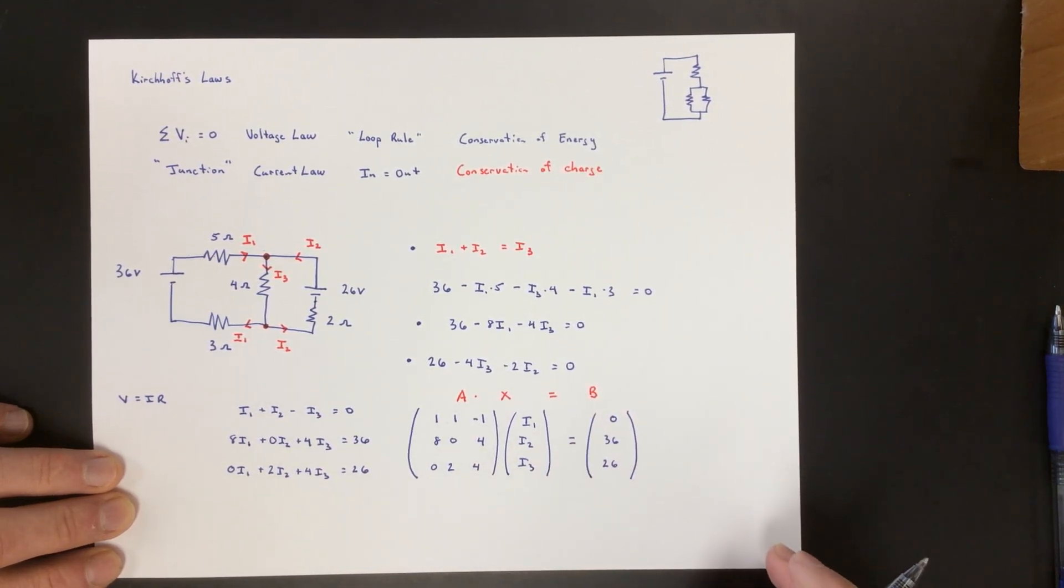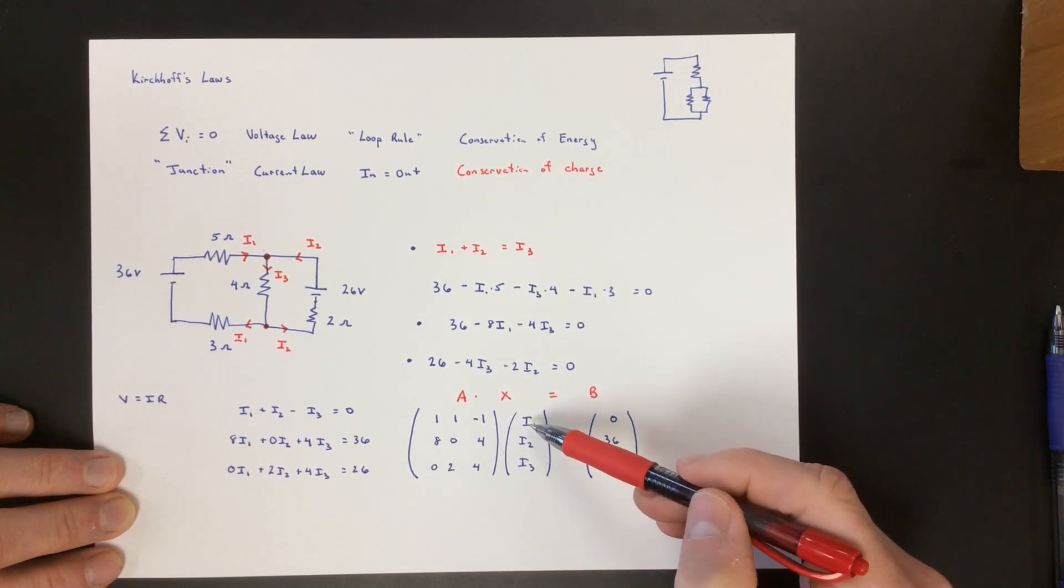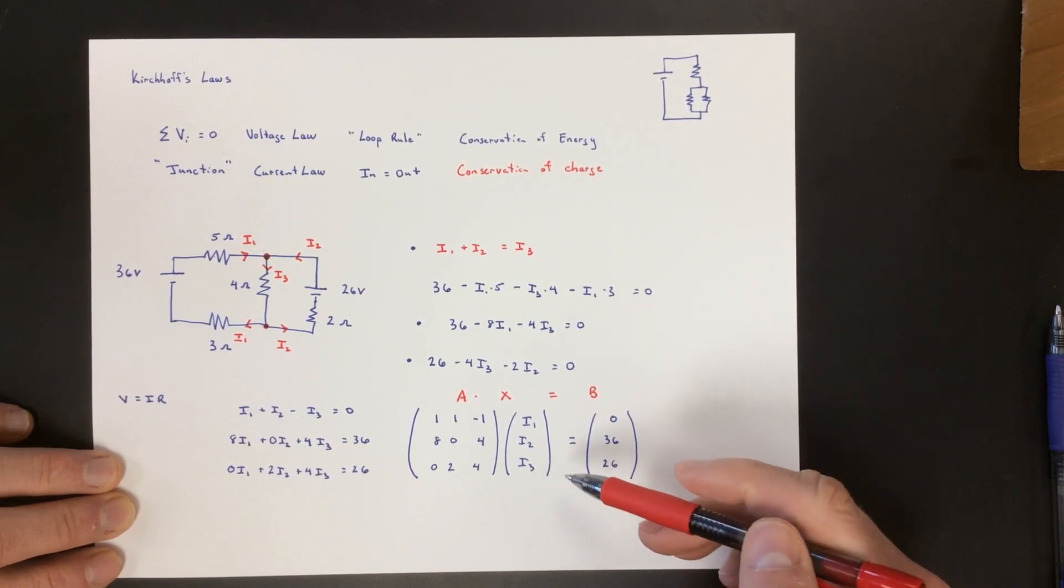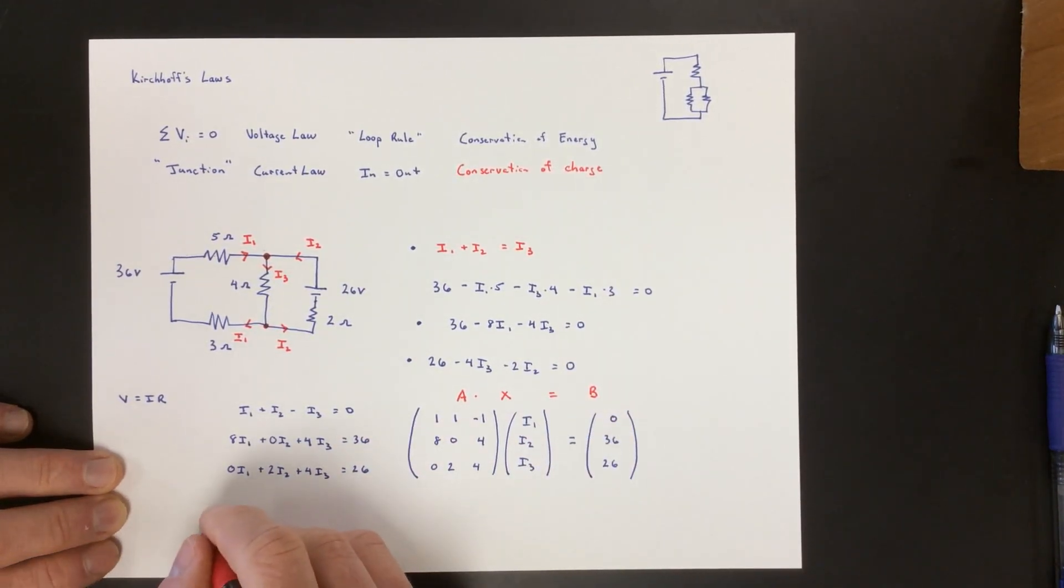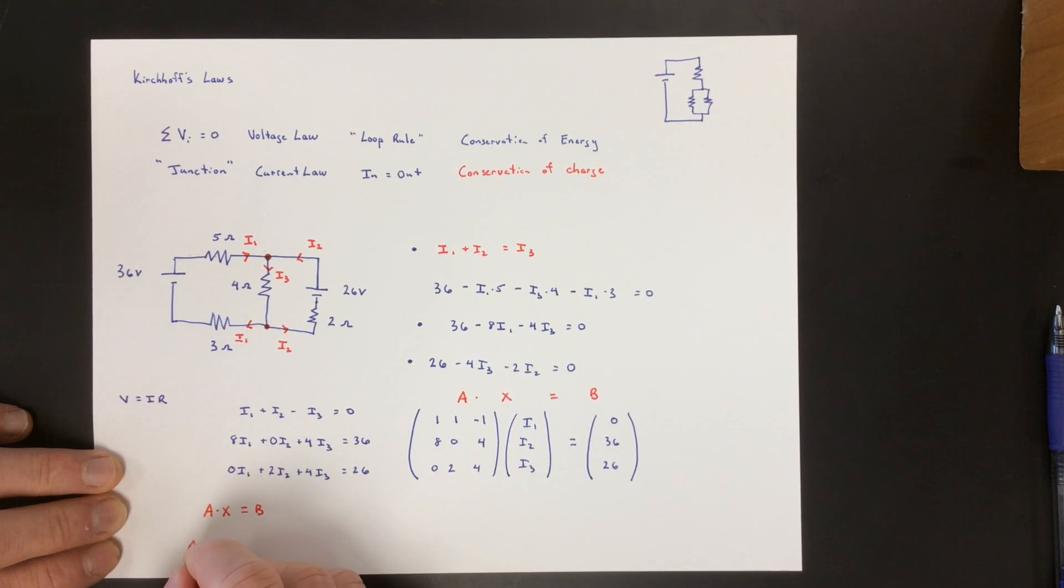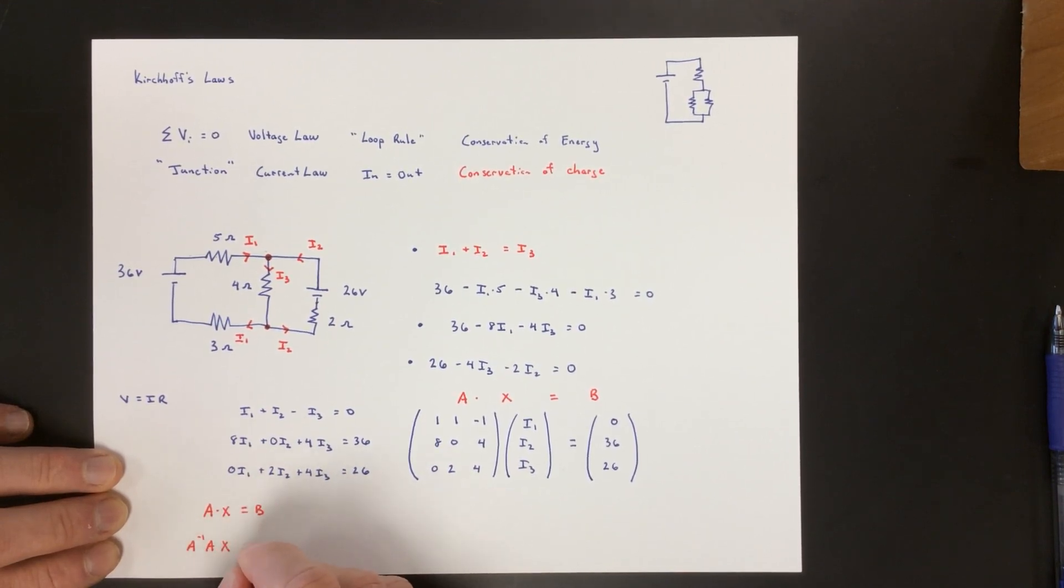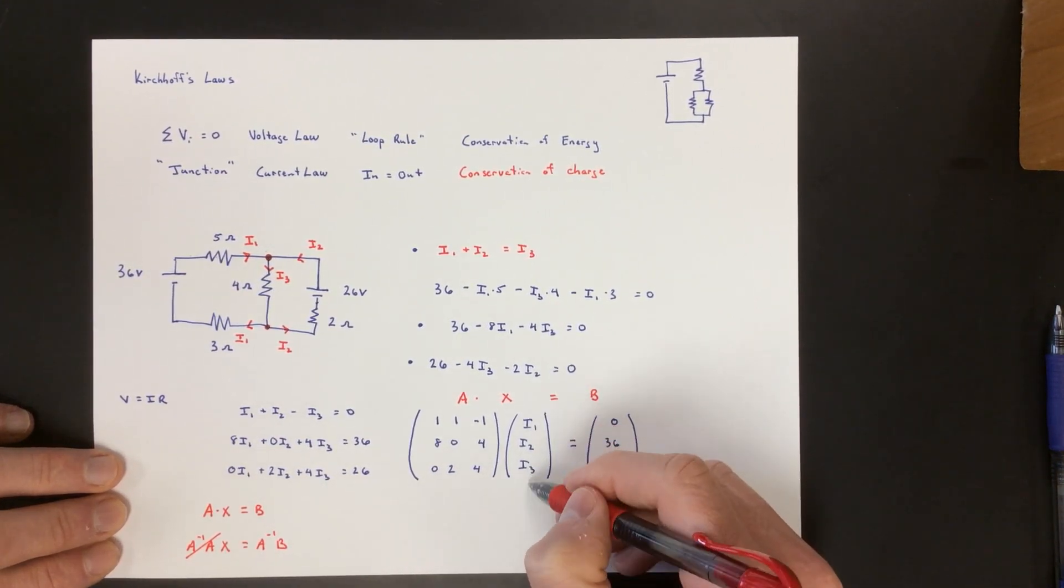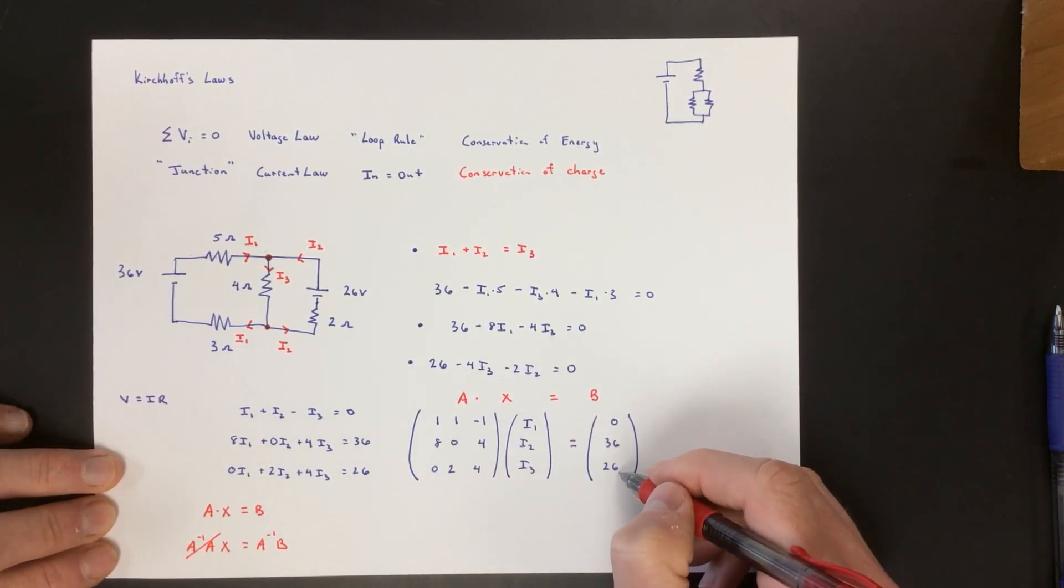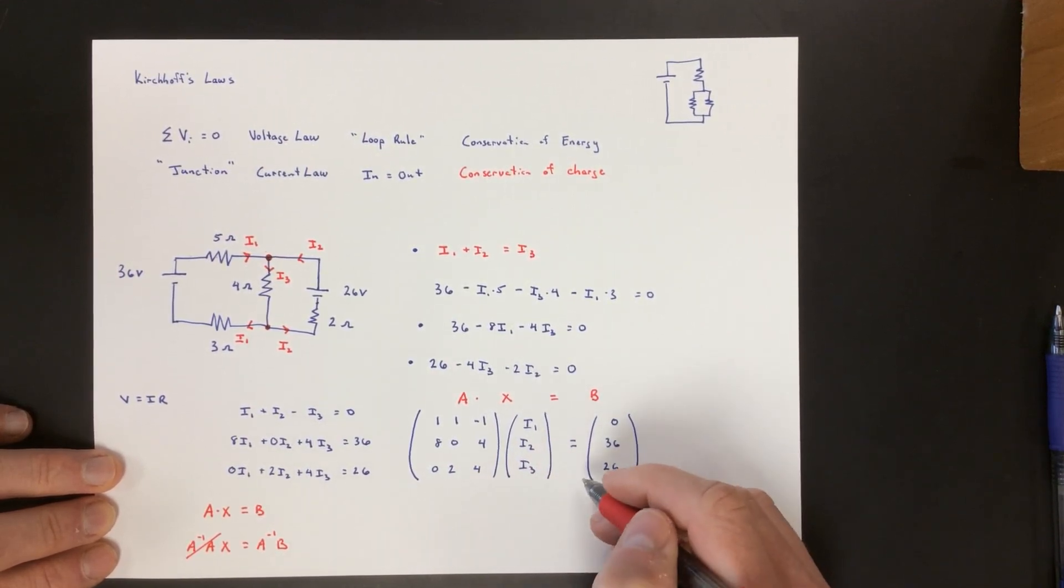This is matrix A times some matrix X equals some matrix B. The beauty is your calculator can solve this in a second. If we want to solve, meaning we want to know matrix X, matrix X is I1, I2, and I3. If you have matrix A times matrix X equals matrix B, you can multiply by A inverse, which is the inverse matrix. A inverse times A is the identity. The identity matrix doesn't do anything. Then X equals inverse A times B. So if you want to find this matrix, all you're going to do is tell your calculator what matrix A is, tell it what matrix B is, and then tell it to do A inverse times matrix B.